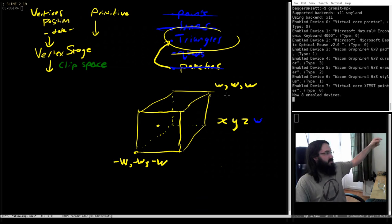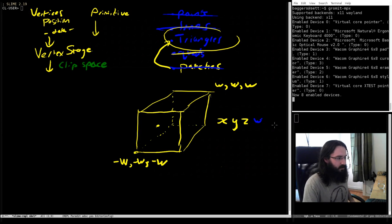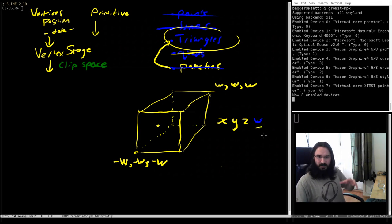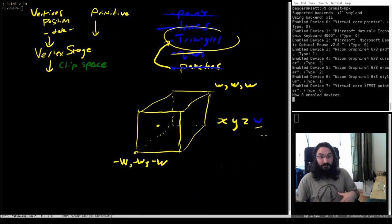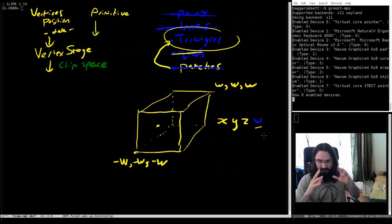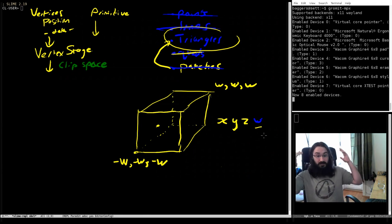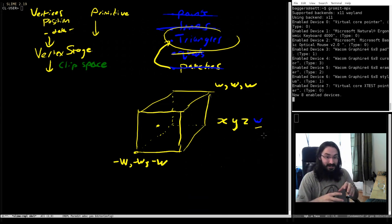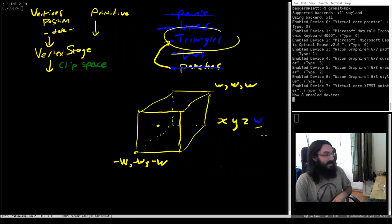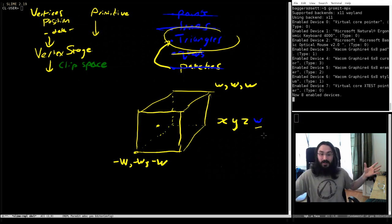Every vertex that we put in can have its own w value, which means every single vertex has its own clip space. If clip space seems weird, just let it wash over you — you don't need to fully understand it now. Even doing 3D stuff you don't have to understand it immediately, and by the time you need it it'll come more naturally. The size of clip space is defined by w and every point can have its own.